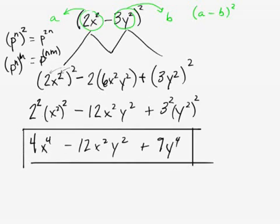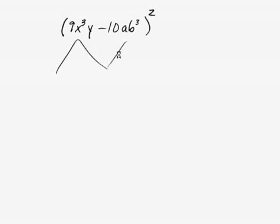Okay, let's do another problem. What if we have (9x³y - 10ab³) raised to the squared? Okay, so let's do this. First, write our little arrows. And here we're going to have square. Then we're going to double. And then we're going to square again. So square, double, square.